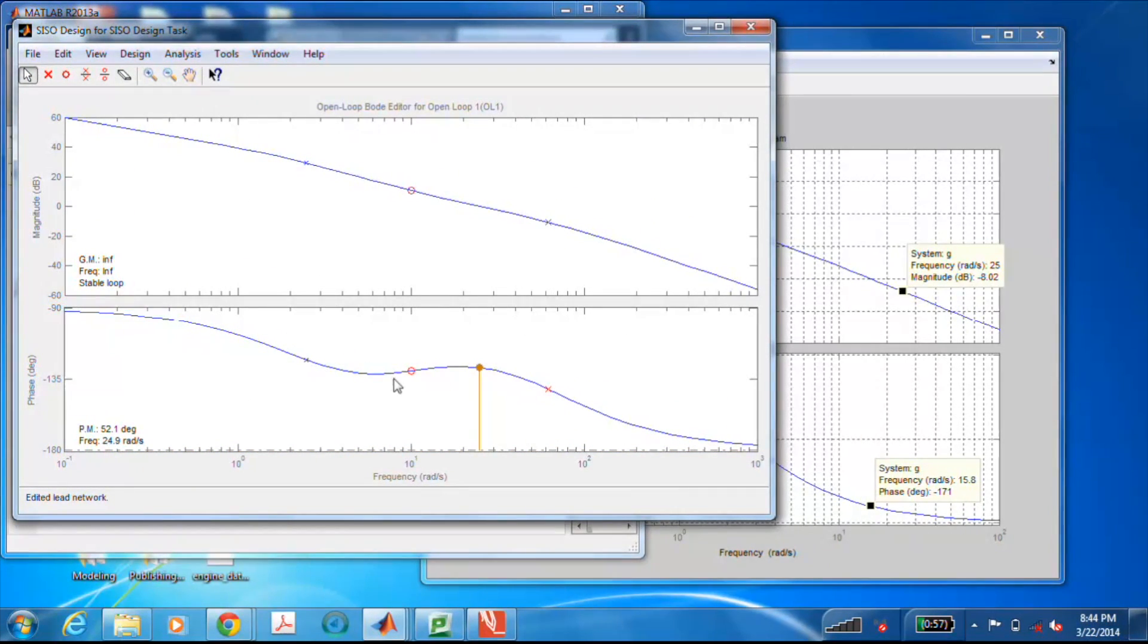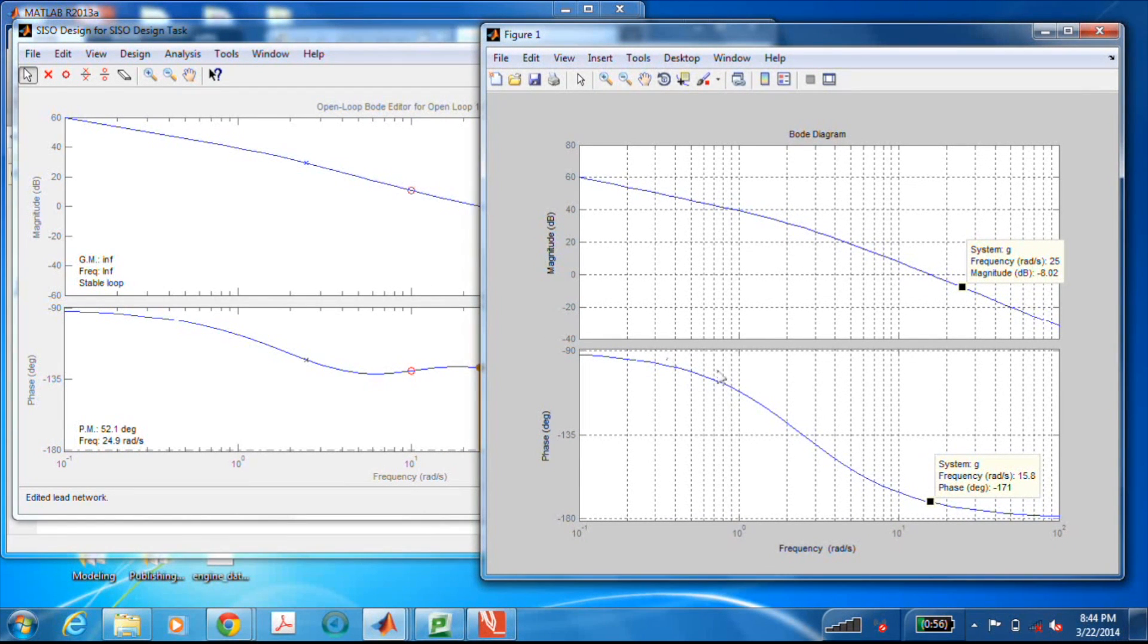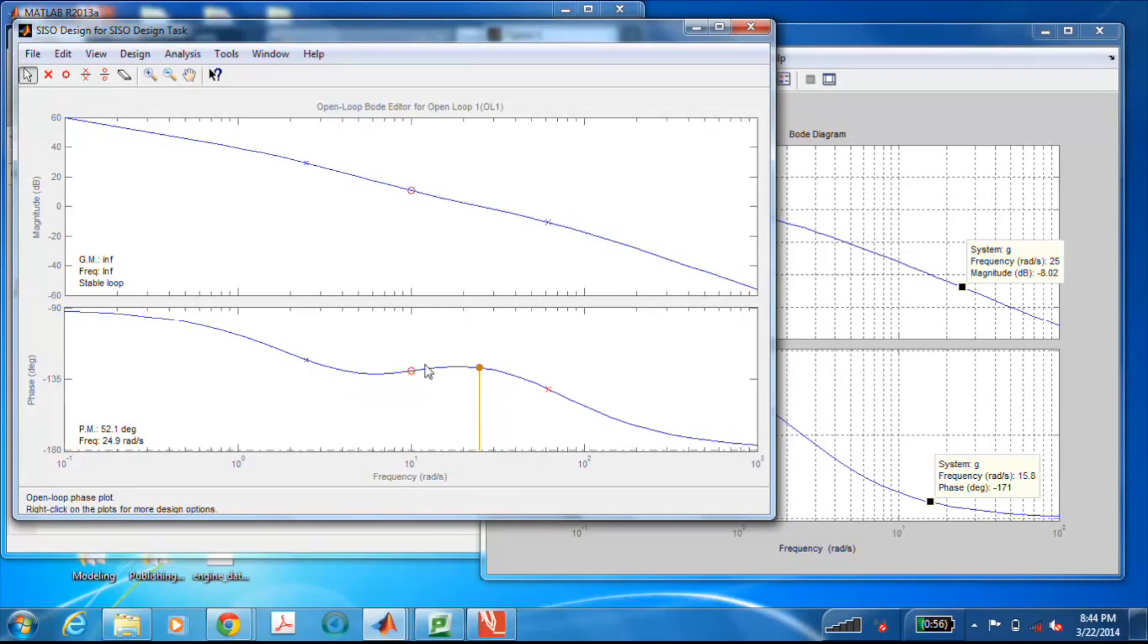So there's our Bode plot. You can see the remnants of the phase bubble right here. And look at that phase margin. We got 52.1 degrees and our gain crossover frequency is 24.9. That's almost exactly what we designed using our equations on the scratch pad. Just as a reference, here's the original Bode plot with the KC of 100. The phase goes down like this, smoothly going down to negative 180. What we did is we put a little phase bubble right about here. And you can see that in the compensated phase plot.